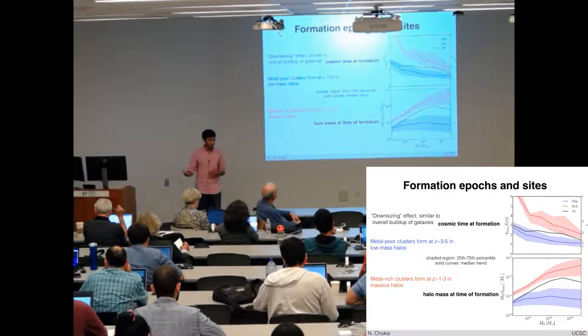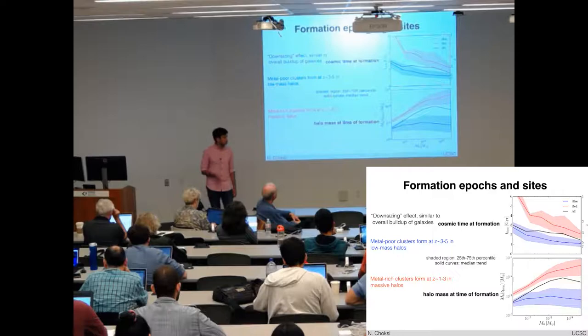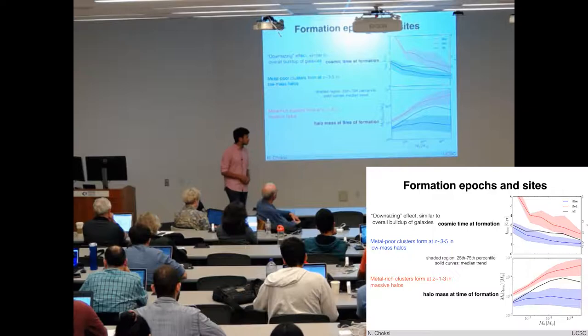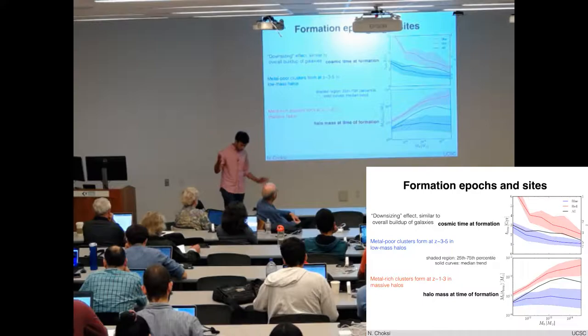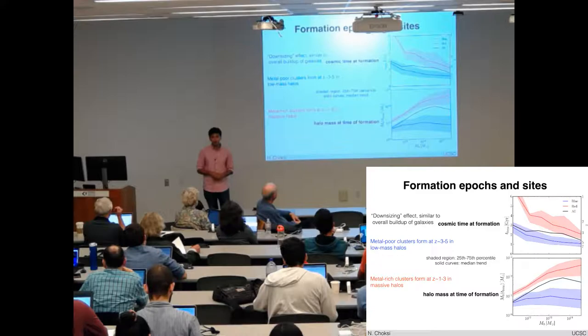The metal poor clusters, as you expect, are forming around redshifts of three to five, at higher redshift in a fairly constant range of halo mass actually, about a few times ten to the ten solar masses. Whereas the metal rich clusters are forming around redshift of two, near the peak of cosmic star formation, maybe a little bit earlier. But they're also forming over a much wider range of halo mass. They're spanning about two dex in halo mass, from ten to the eleven to ten to the thirteen.